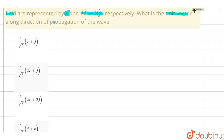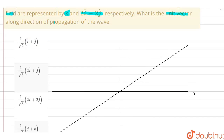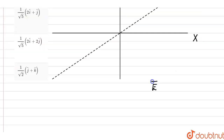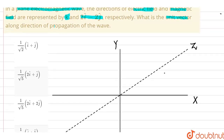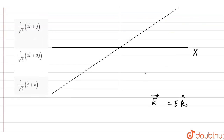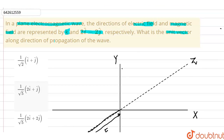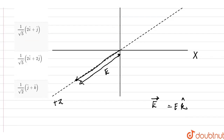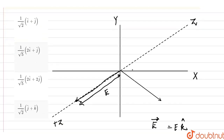Here are our options. Let's suppose that here is our x-axis, this is our y-axis, and this is our z-axis. The electric field E vector is in the direction of k-cap — let's say the magnitude is E — so this is along the positive z-axis. The magnetic field is given to be 2i minus 2j cap, so the magnetic field vector lies in the direction of 2i minus 2j cap.